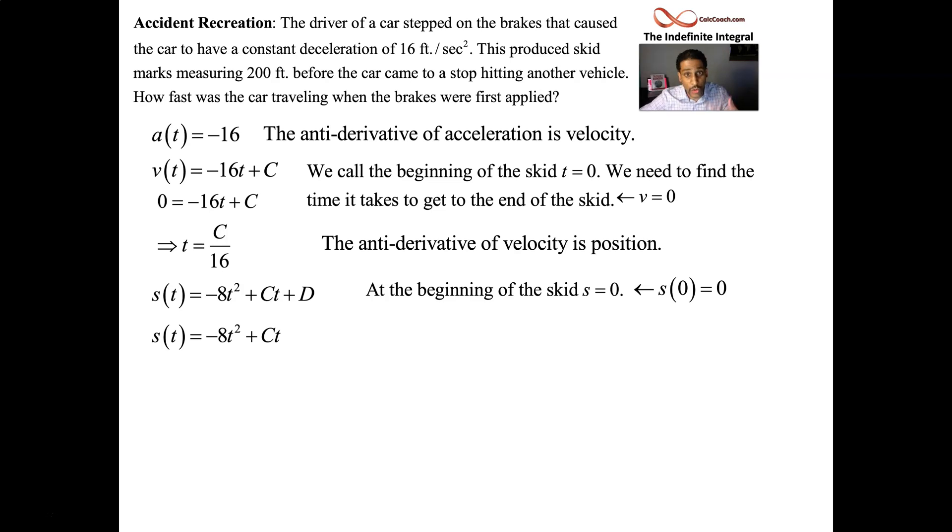And you're supposed to be able to use this now to figure out how fast the car was going when the brakes were first applied. Because then, based off of that, you could say whether they were at fault. If this is a residential area and you're traveling 60 miles an hour, yeah, they're at fault. But maybe they were traveling 30 miles an hour. So let's find that out. Go to the end of the skid. We talked about the beginning of the skid where s is zero and t is zero. What about the end of the skid?